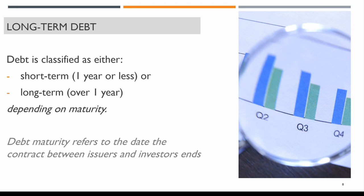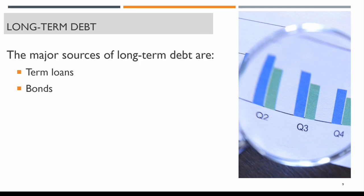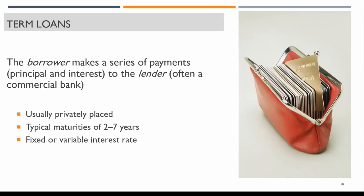When we refer to debt maturity, this refers to the date the contract between issuers and investors ends. The major sources of long-term debt are term loans and bonds. In the context of term loans, the borrower makes a series of payments to the lender consisting of principal plus interest. The lender is generally a commercial bank or financial institution, and term loans are generally privately placed.